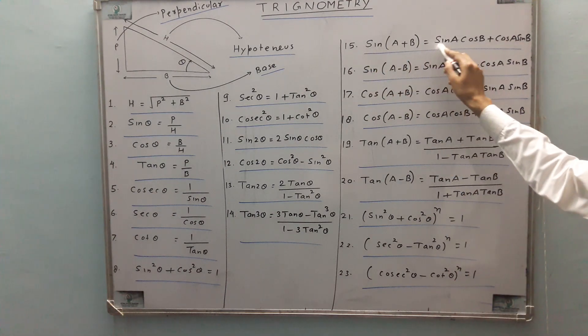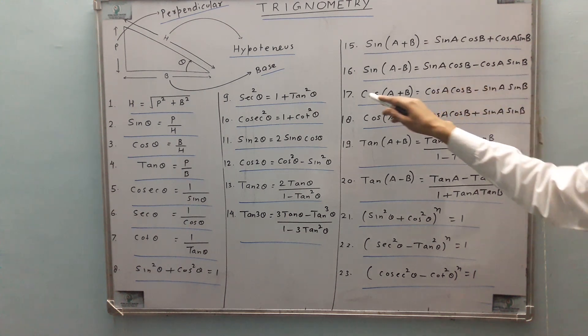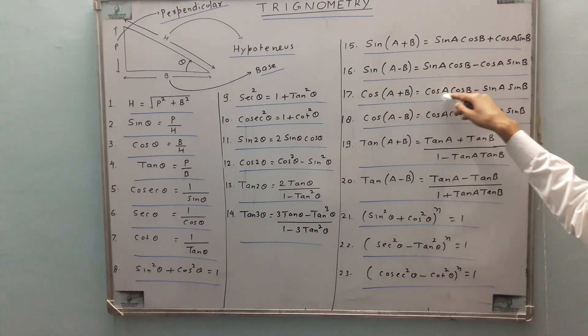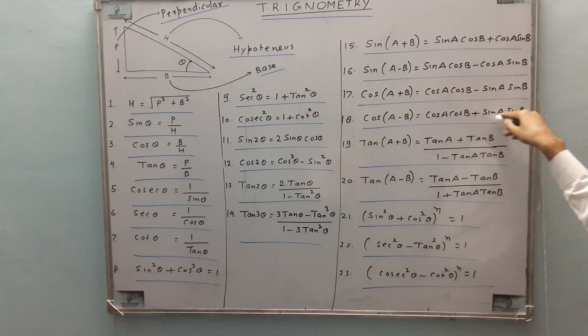15th rule is sin of a plus b is sin a cos b plus cos a sin b. 16th is sin of a minus b is sin a cos b minus cos a sin b. 17th is cos of a plus b is cos a cos b minus sin a sin b. 18th is cos of a minus b is cos a cos b plus sin a sin b.